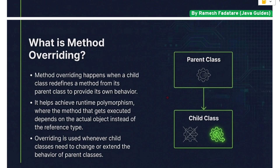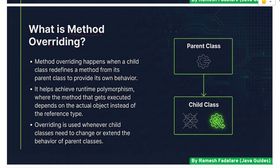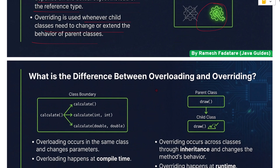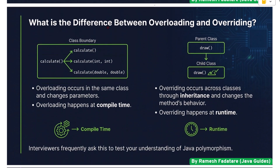What is method overriding? Method overriding happens when a child class redefines a method from its parent class to provide its own behavior. It helps achieve runtime polymorphism, where the method that gets executed depends on the actual object instead of the reference type. Overriding is used whenever child classes need to change or extend the behavior of parent classes.